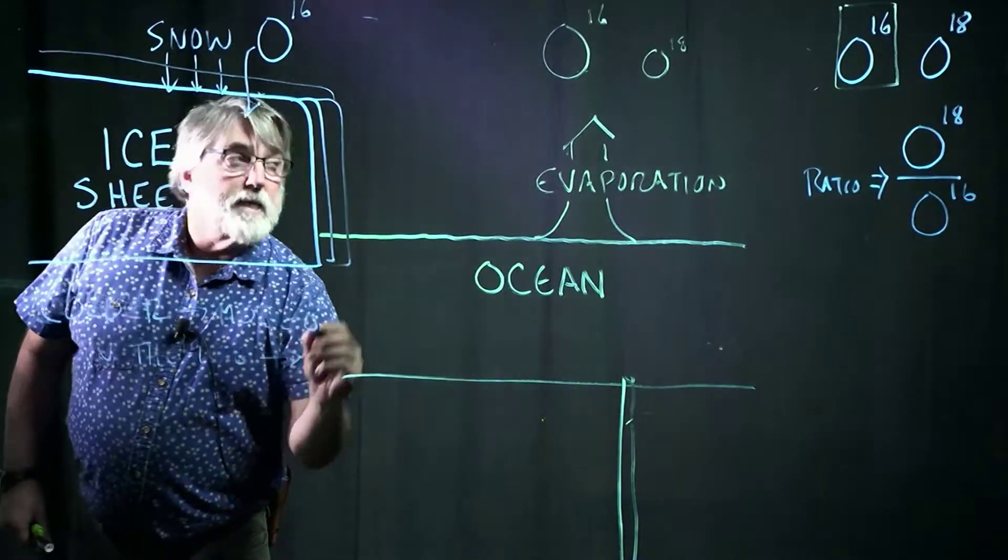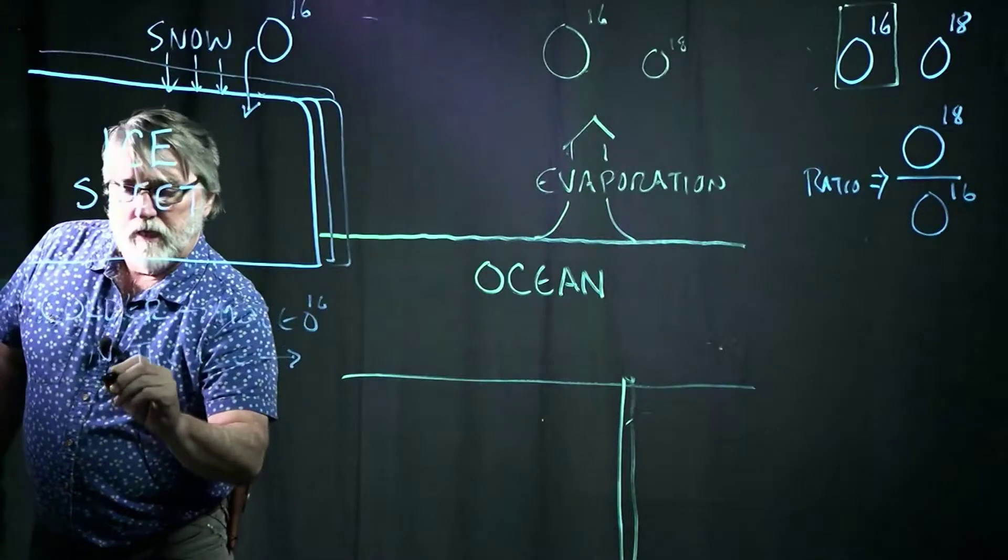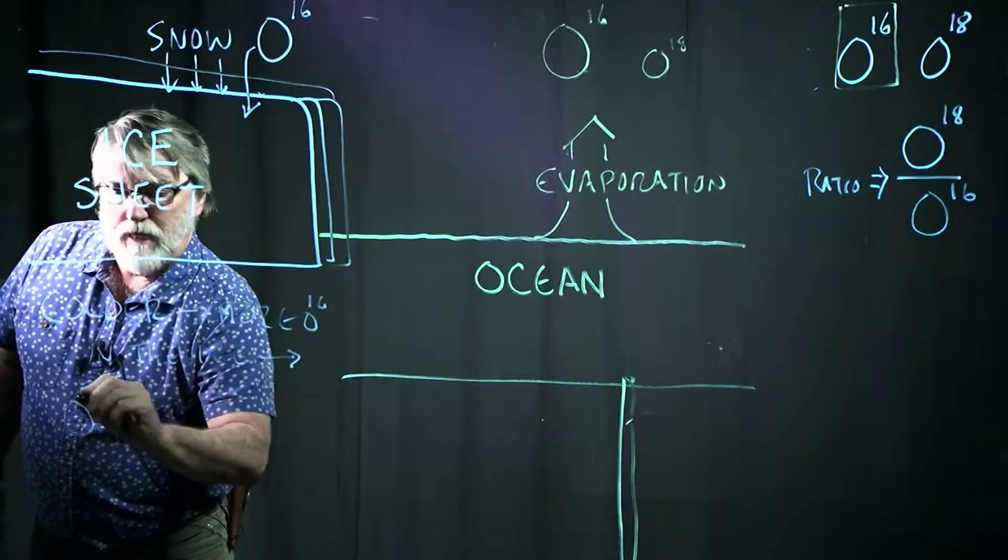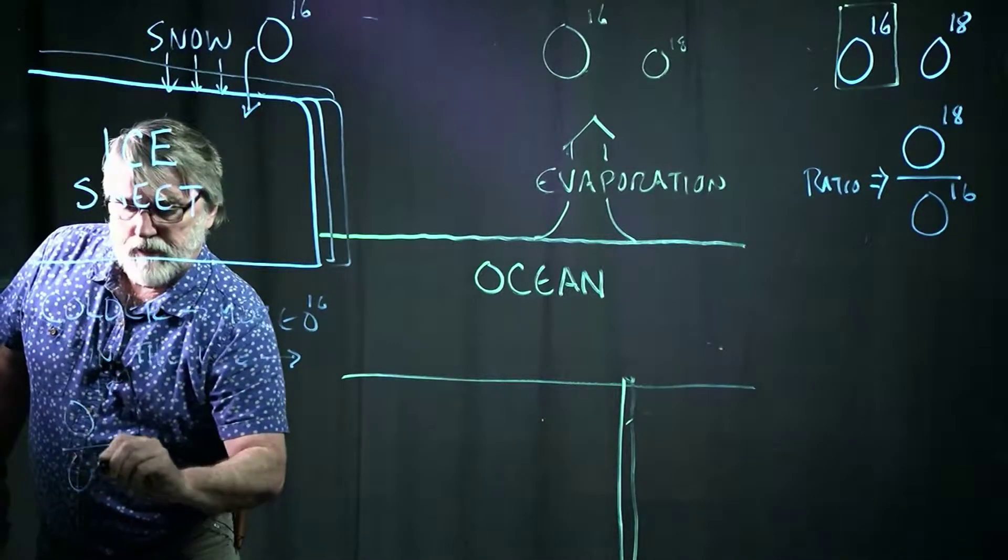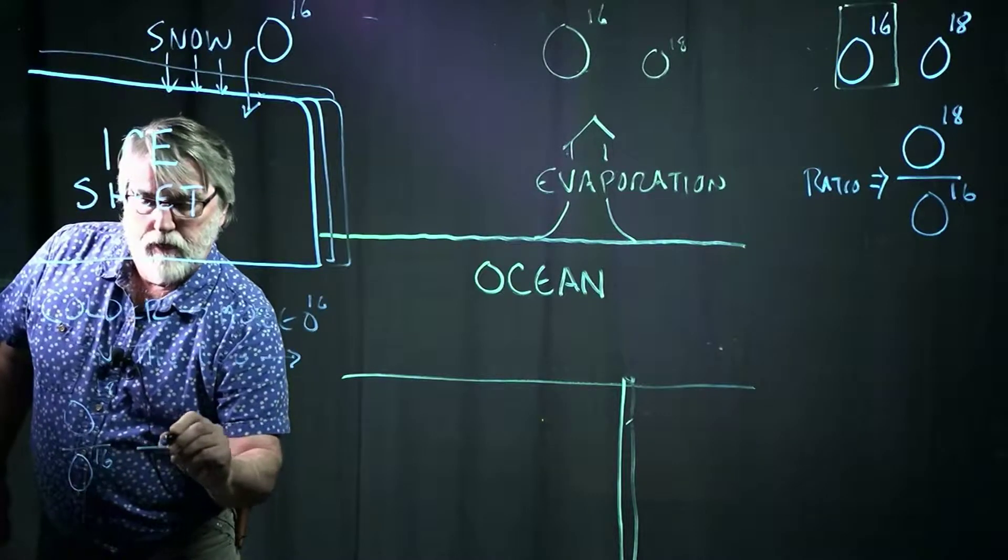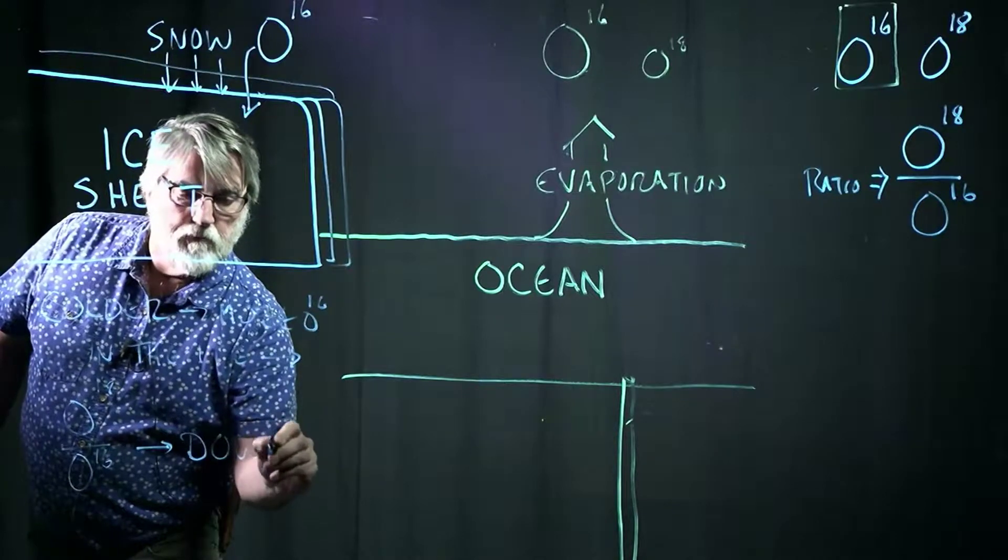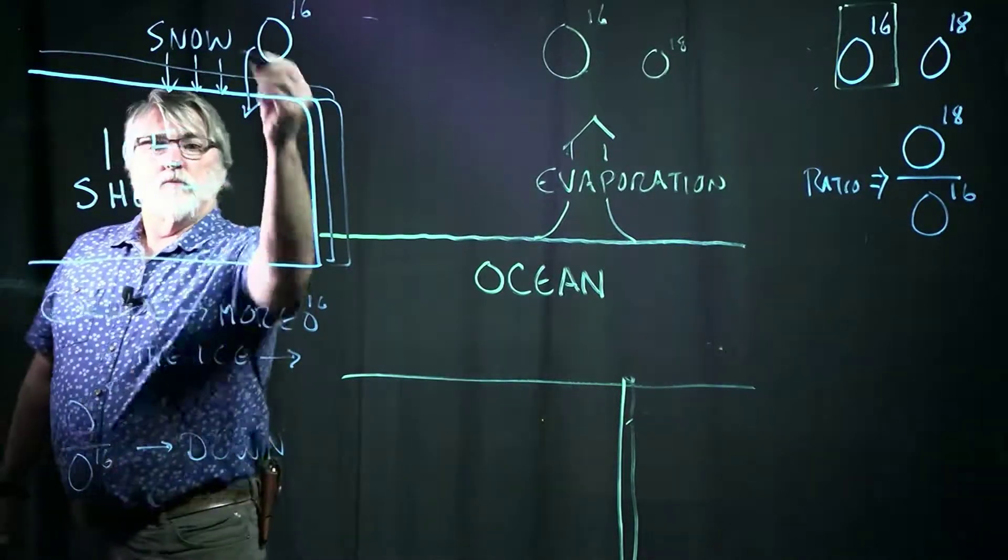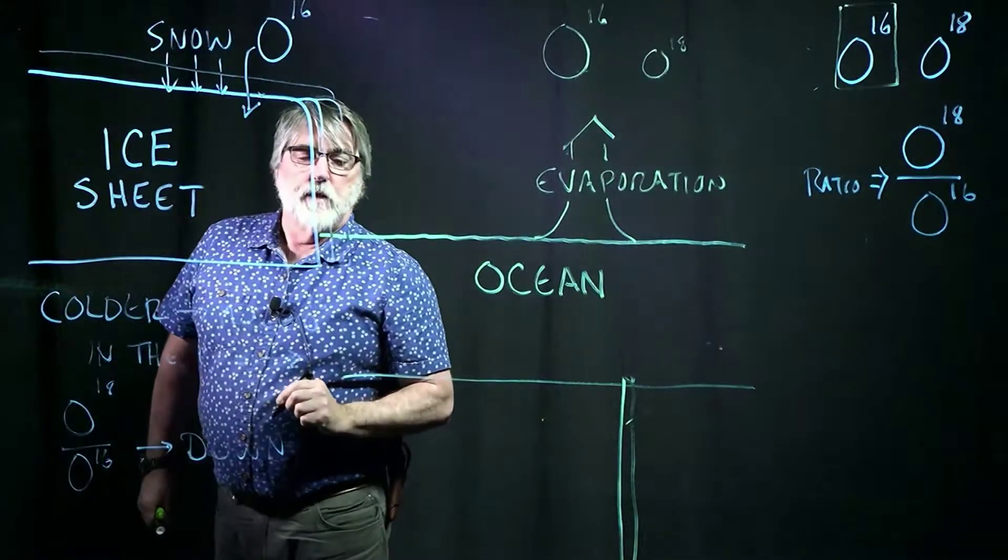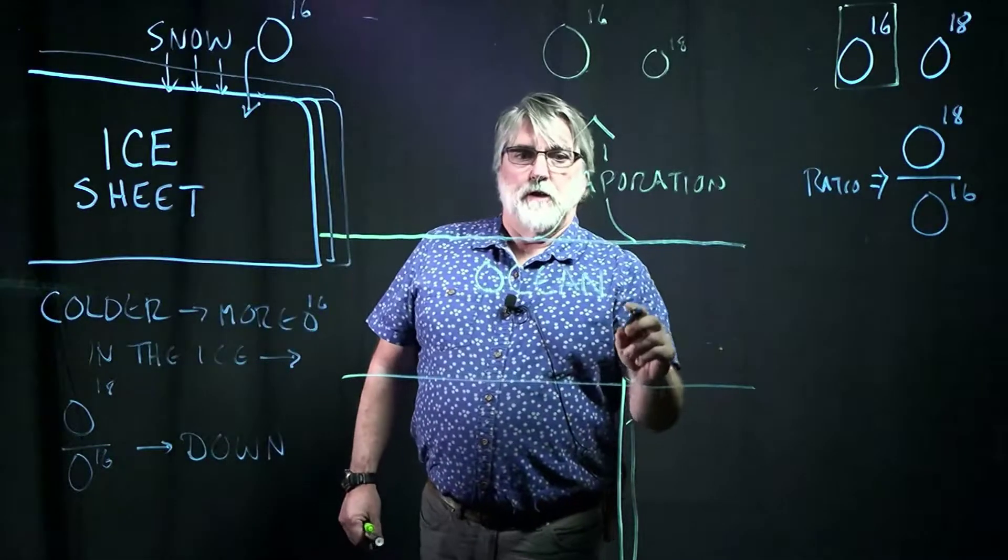So in the ice, that ratio, the O18 to O16 ratio, because there's more O16 in it, goes down because there's more O16 going in here. Think about the oceans on the other hand.